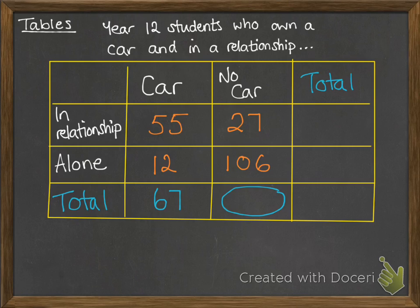In this space here we're adding up how many students don't have a car, so total down that 27 and 106 and you're going to get 133.